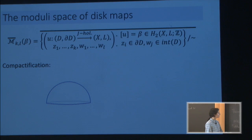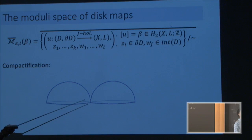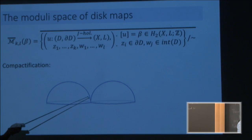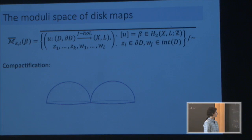The compactification takes into account a new kind of phenomenon that happens only with disks. The bubbling now has two options: it can happen as before, or it can happen near the boundary, in which case you end up in the limit having nodes at the boundary — real nodes. This is very different from before: this kind of node has codimension one in the moduli space — real codimension one — whereas before we had a complex node, which had complex codimension one, so real codimension two.